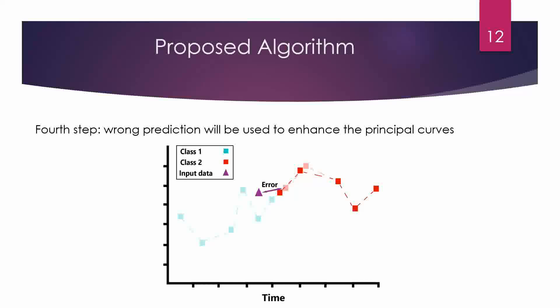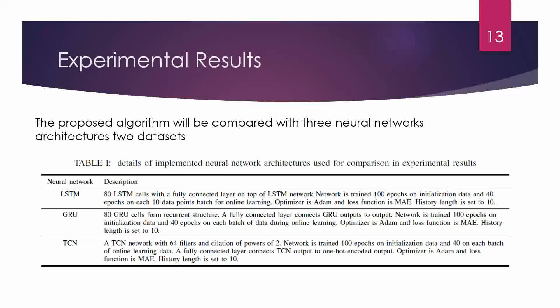For that purpose, we project the data point onto that principal curve, and the vector between them is called the error vector. The corresponding principal curve then moves along the error vector to decrease the error. For our experimental results, we compare the proposed algorithm with three famous recurrent neural network-based classifiers.